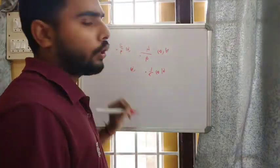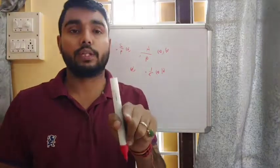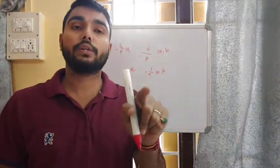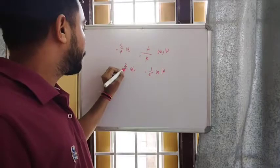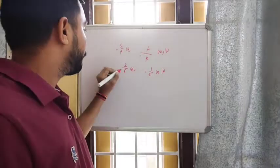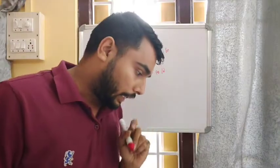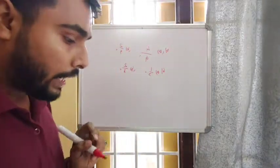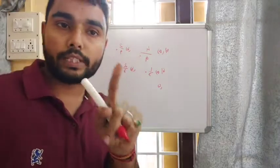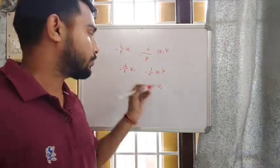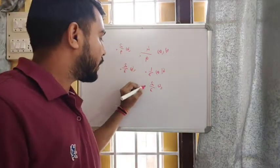For 'not a one': you can get two or three, so two outcomes are in favor. Probability of not a one is two by three. For an odd number: one and three are odd, so two outcomes out of three total. Probability is two by three.